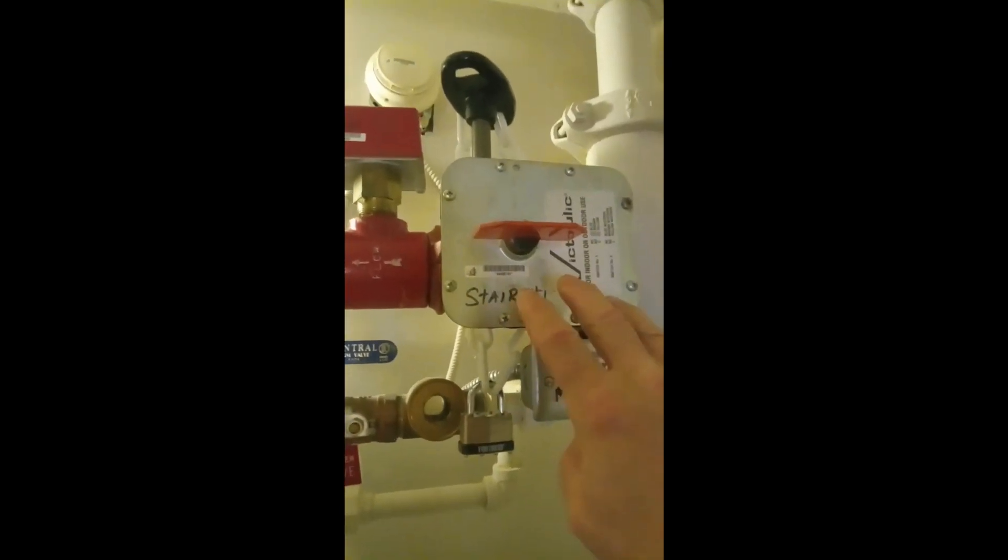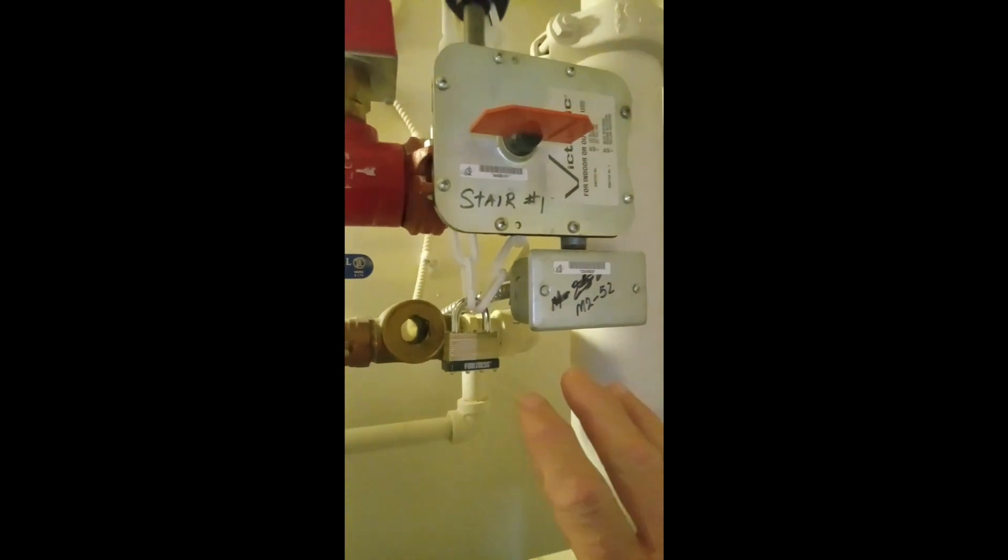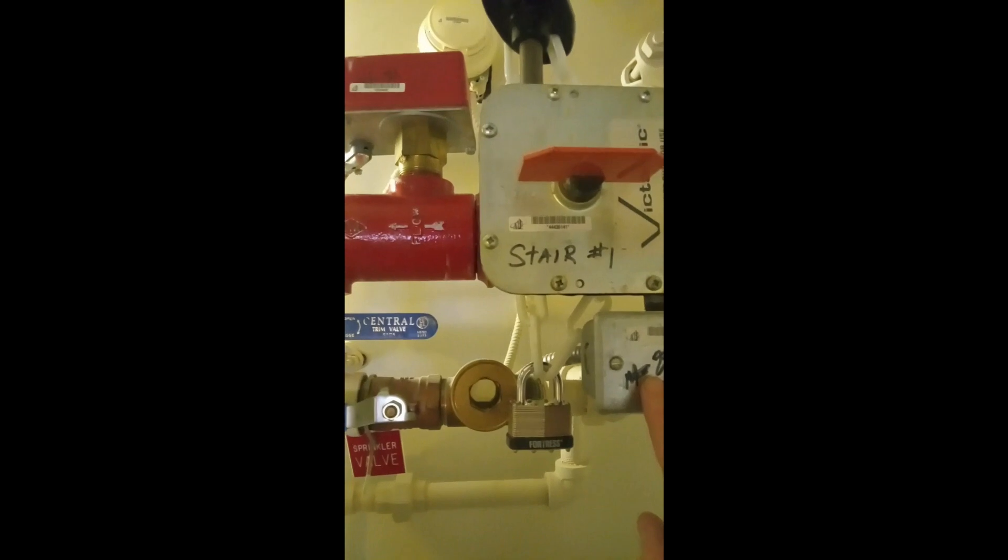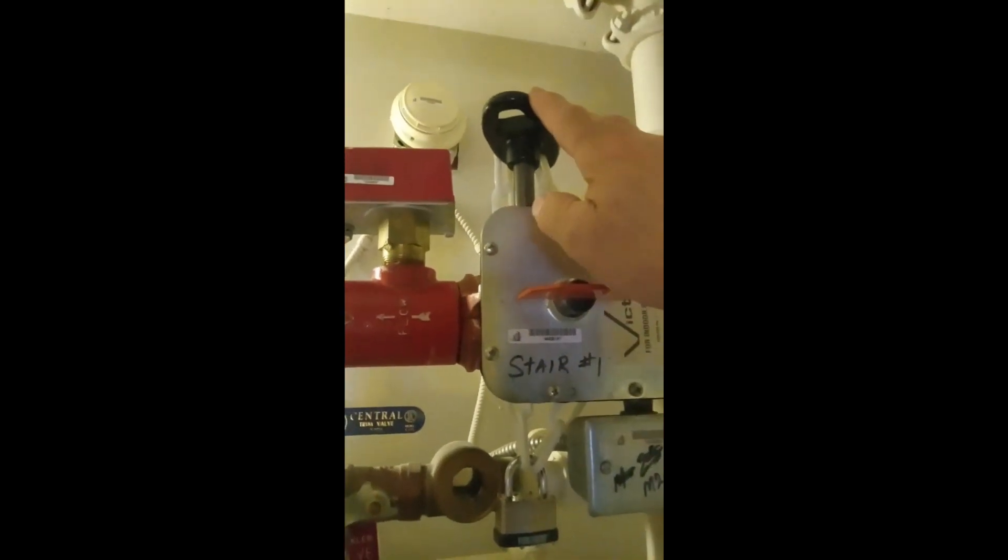This is the shutoff valve. The shutoff valve has a lock to prevent any unauthorized use. The shutoff valve is connected to what is called a tamper. When the shutoff valve handle is turned, it sends a signal to the fire alarm panel telling us that someone is turning off the water to the sprinkler system.